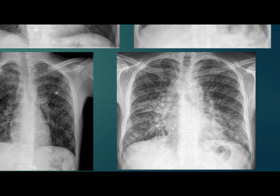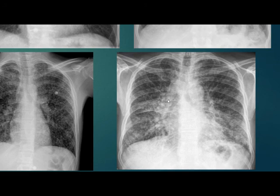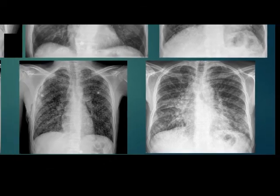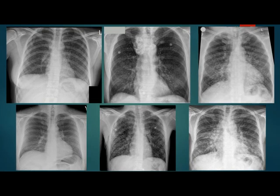In the last case, we can see nodularity and interstitial thickening, along with prominent hila and paratracheal involvement. This is a case of sarcoidosis. In conclusion, careful inspection and description of the nodularity — including distribution and associated abnormalities — are crucial to narrow down the differential diagnosis. Thank you for watching.